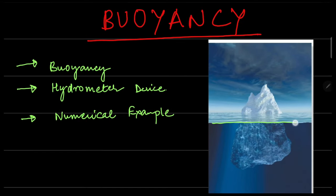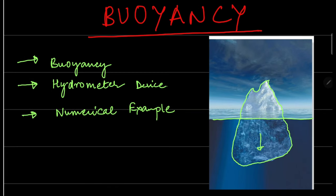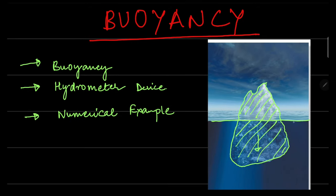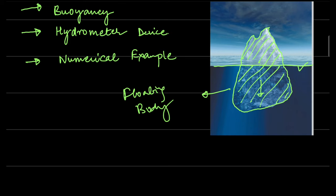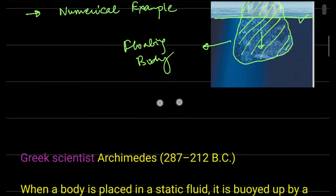On the right side you can see a sea level with ice floating. This particular part is submerged inside the sea and some part floats above the sea level — we call it a floating body. Buoyancy was discovered by the Greek scientist Archimedes. His principle states that whenever a body is placed in a static fluid, the buoyancy force applied on the body is equal to the weight of the fluid displaced by the body.